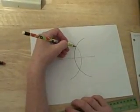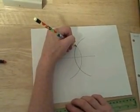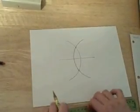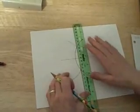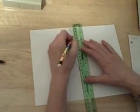Now, notice the two places where those arcs intersect. Put a point at those places. Take your straight edge and connect those two points.